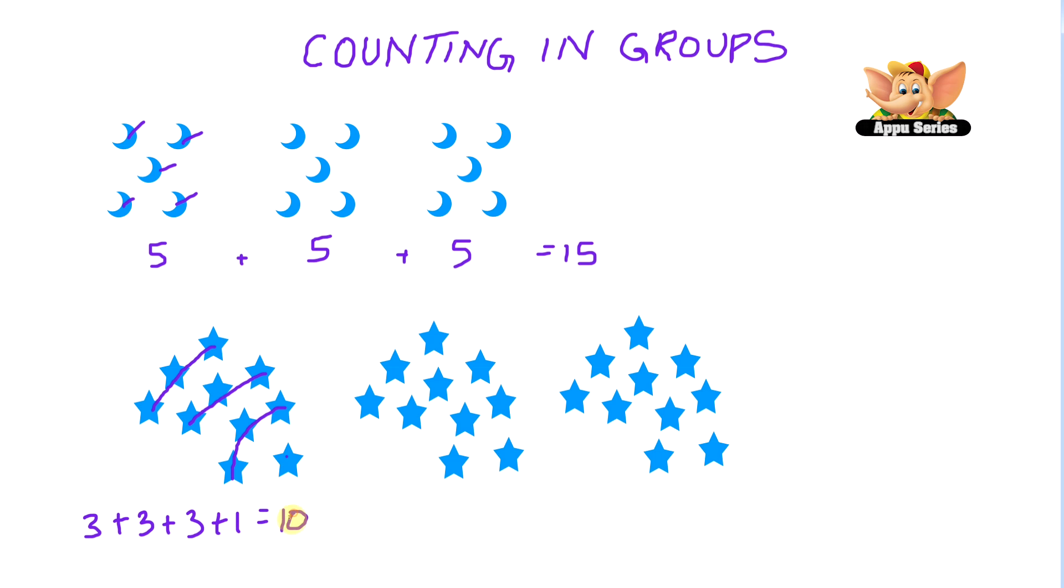So we know there are ten stars in a group and there are three groups here. So that's ten plus ten plus ten equals thirty. So there are more than twenty stars.